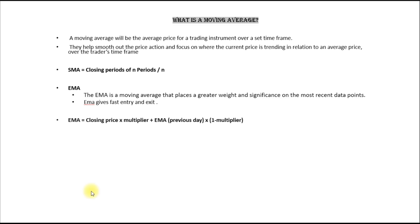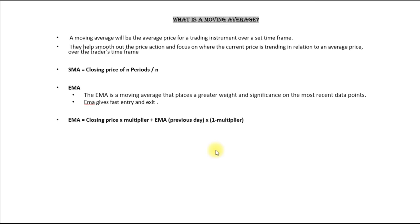EMA is nothing but Exponential Moving Average and SMA is Simple Moving Average. Moving average is the average price of the trading instrument for a particular period of time. The instrument can be an index, stock, or currencies, and the time period can be 5 minutes, 15 minutes, one hour, four hours, or daily. Moving average helps make price action easier and helps trade according to the direction of the market.